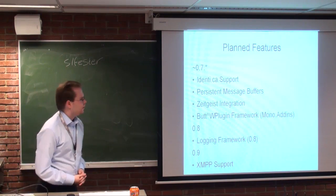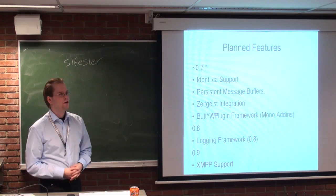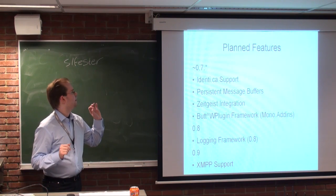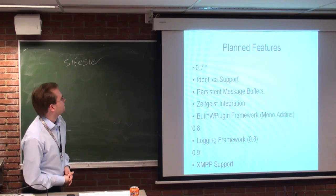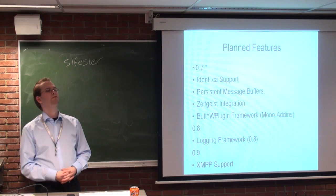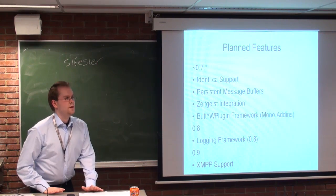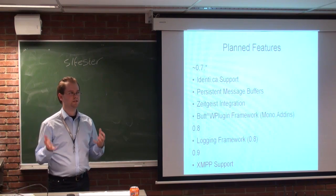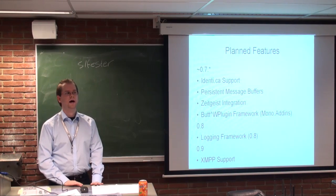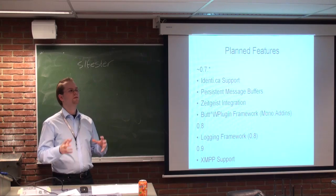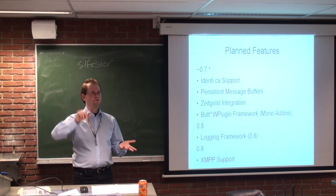So what's the current state of Smuxi? Development is very active lately and new developers have joined the project. One of them is working on Identi.ca support, because right now Twitter is working but not Identi.ca — Identi.ca has a Twitter-compatible API, but it's not supported yet. Also planned are persistent message buffers. That means if you have to kill your Smuxi server, currently you lose your old messages. What Smuxi will do next is store those messages in a lightweight database like SQLite, so if you restart the Smuxi server the old messages will be reloaded into the buffers and you won't lose anything. You can also go back through the history of old discussions.